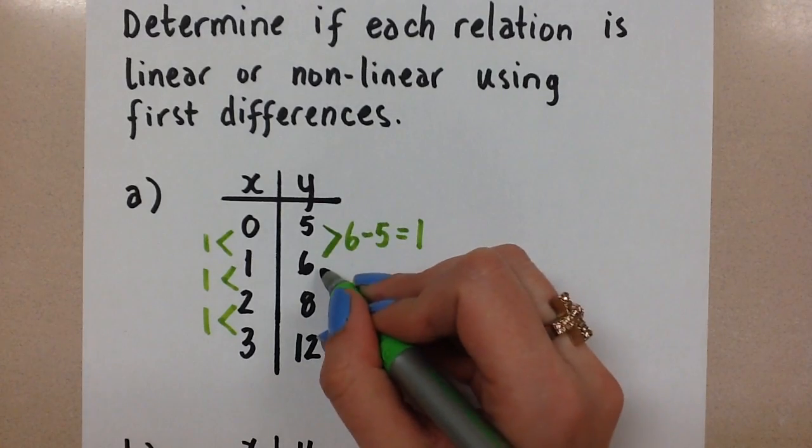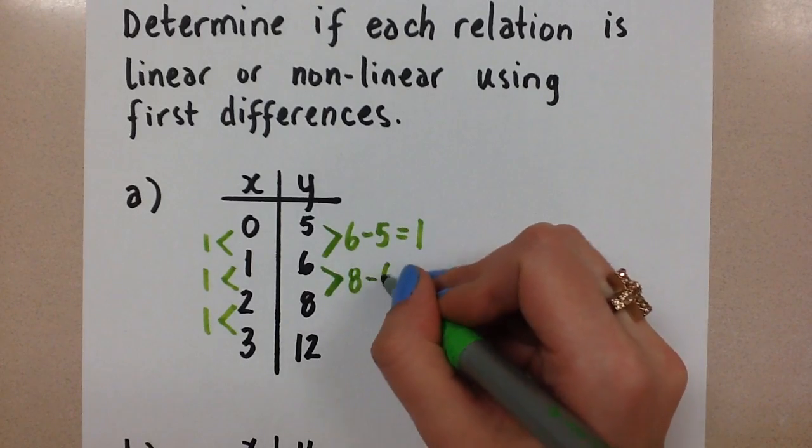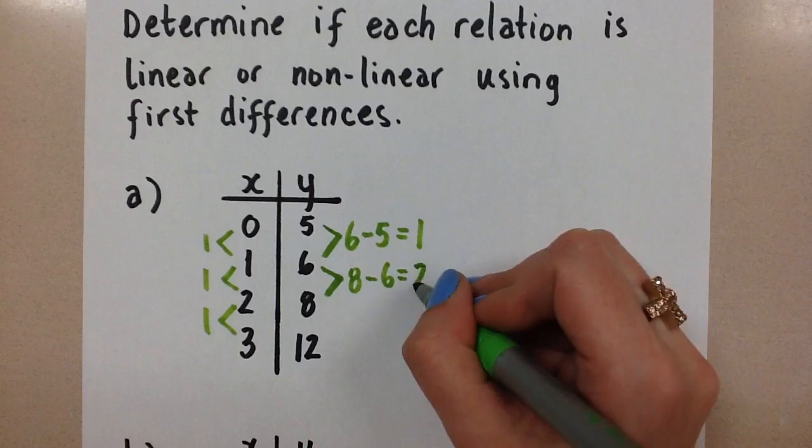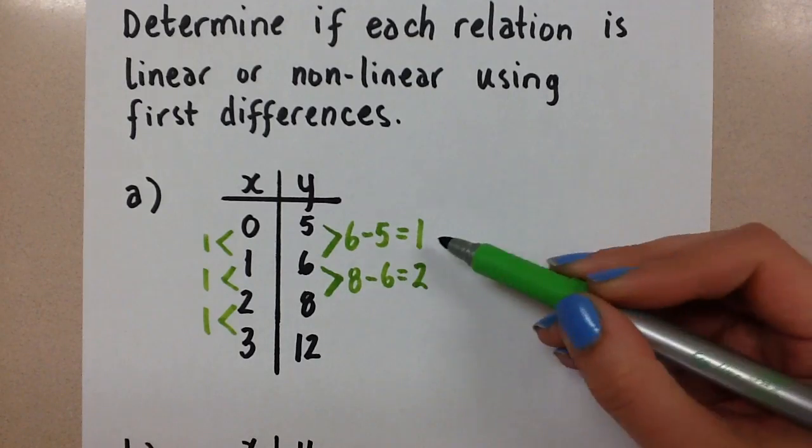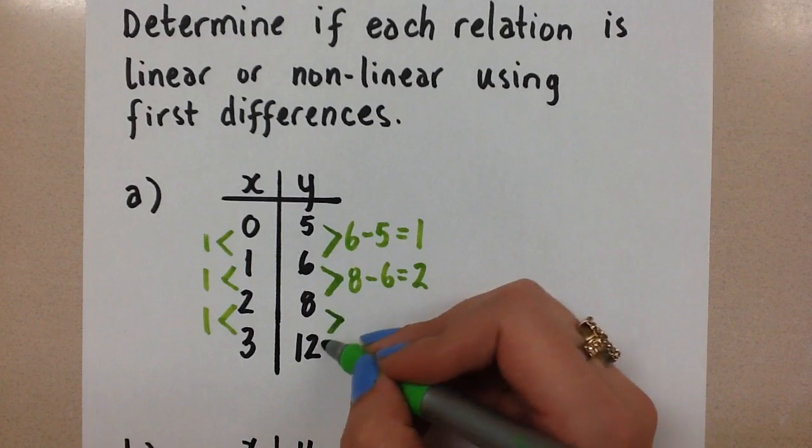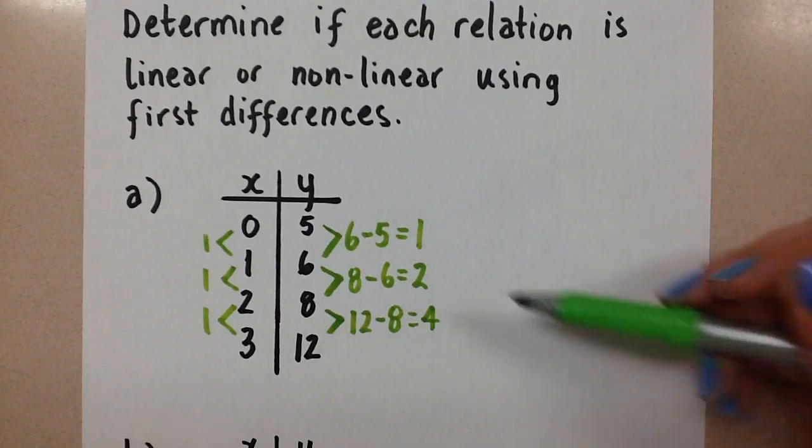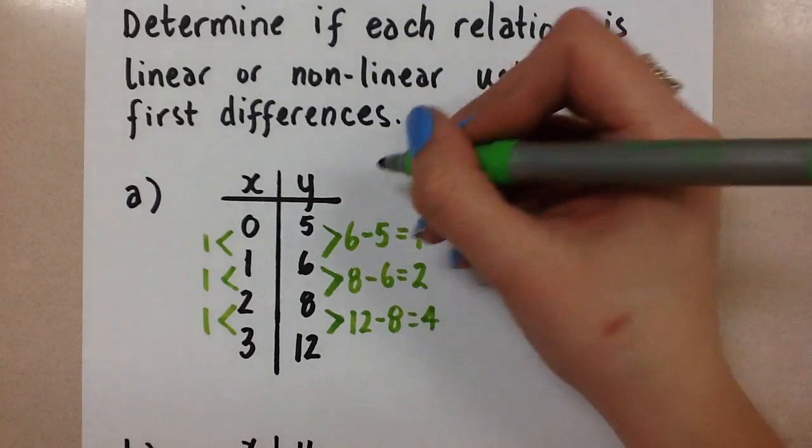Now we're going to compare the next two y values. So we'll do 8 minus 6 equals 2. So this already is enough to show that it's non-linear, but let's do the last set. 12 minus 8 equals 4. So take a look at the first differences that we have here.